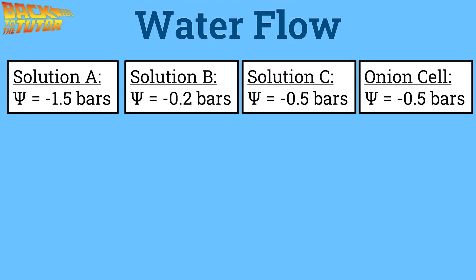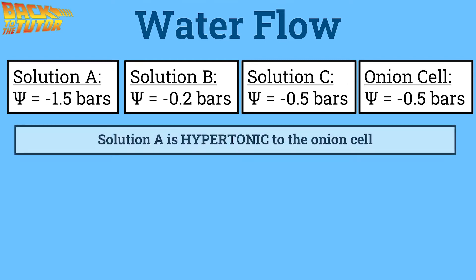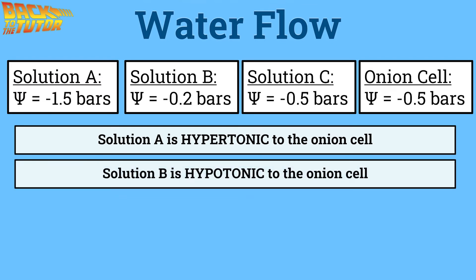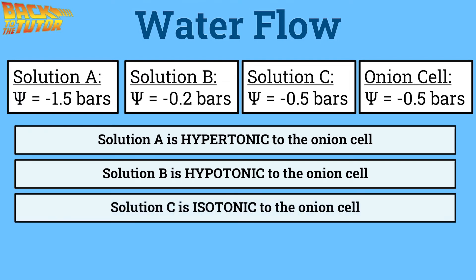Let's go back to the practice problem and incorporate tonicity. Solution A has a lower water potential than the onion cell, so water will flow out — solution A is hypertonic to the onion cell. Solution B has a higher water potential than the onion cell, so water flows into the cell — solution B is hypotonic to the onion cell. Solution C has the same water potential as the onion cell, so it is isotonic to the onion cell because there will be no net movement of water in or out of the cell.